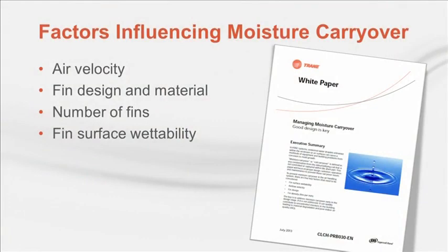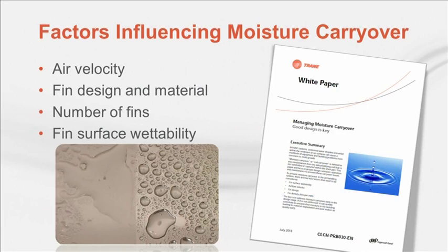This rule has provided satisfactory results broadly but doesn't account for all factors affecting carryover — it's often too conservative, resulting in oversized equipment, or in some cases not conservative enough. The four primary factors contributing to moisture carryover are: air velocity, the design of the fin surface, the material the fins are made of, and fin spacing. Wettability also matters — it describes how easily moisture beads up on the fin surface. A freshly waxed car beads water well, but it's easy for moving air to strip off those droplets, causing carryover. Fin material and corrosion coatings are common features that result in poor fin surface wettability.